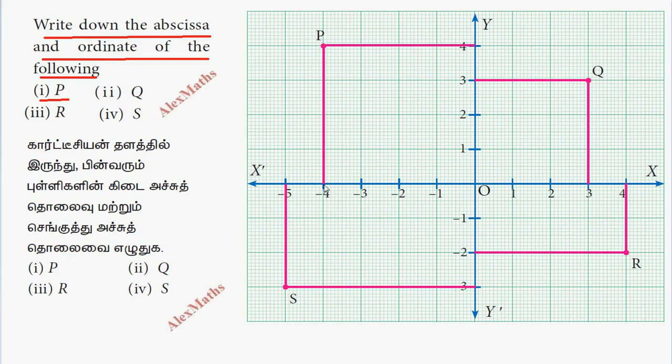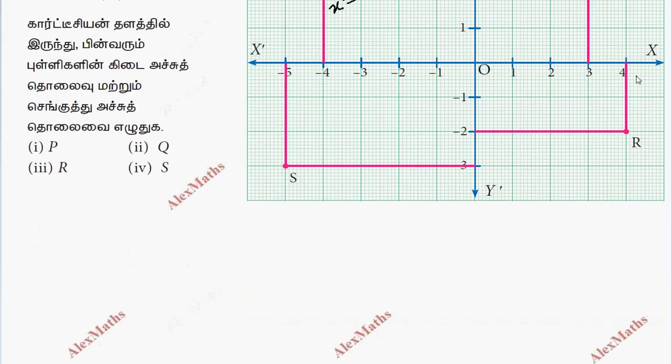The x-coordinate value is minus 4, so the vertical line equation is x equals minus 4. The y-coordinate value is 4, so y equals 4. Point P has coordinates minus 4 comma 4. The abscissa is x equals minus 4 and the ordinate is y equals plus 4.